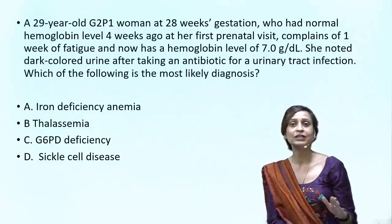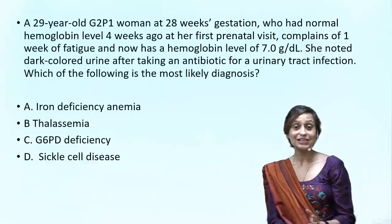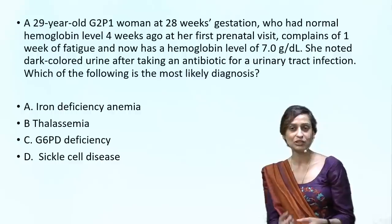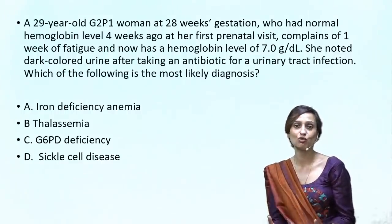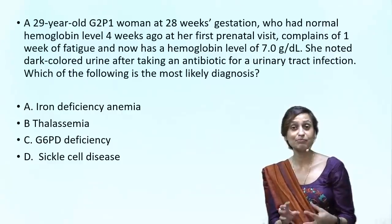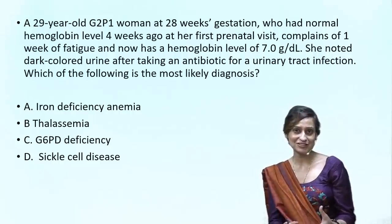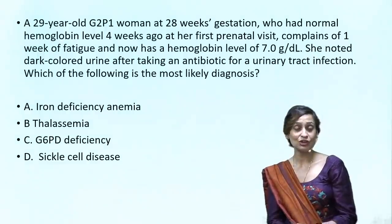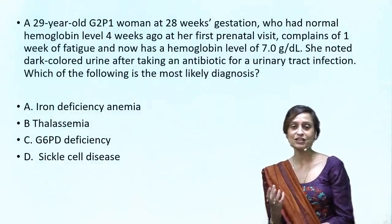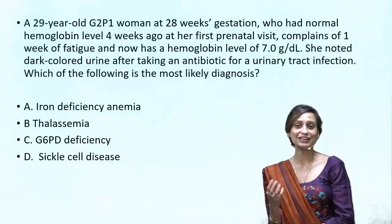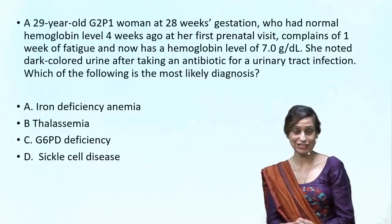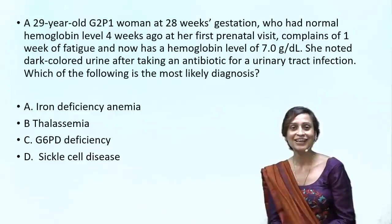How do we rule out sickle cell disease? If this sudden fall in hemoglobin were due to a sickle cell crisis, the patient would be much more symptomatic — there would be bone pains, it is a painful condition. But this patient is only complaining of fatigue or weakness. Due to the absence of characteristic features of sickle cell disease, especially during a sickling crisis, we rule it out. That leaves us with G6PD.